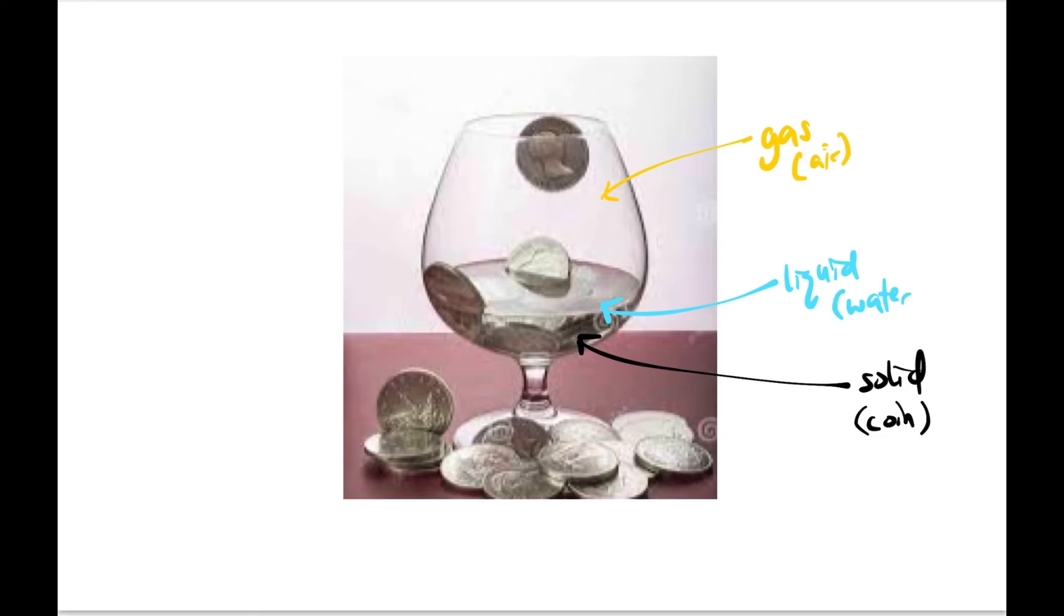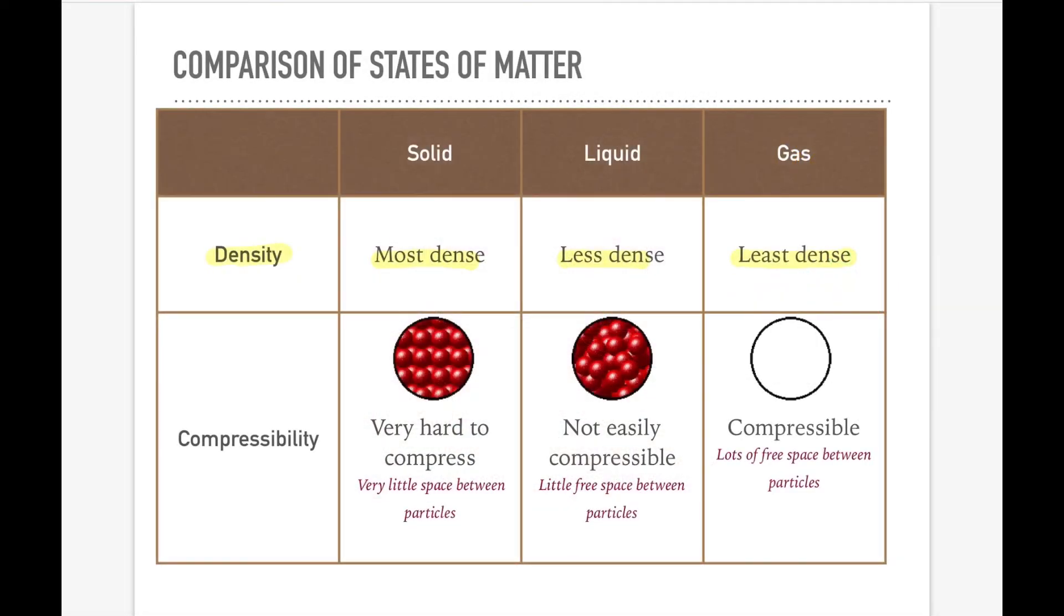Last but not least, compressibility. Basically, solid is very hard to compress because the space between particles is very small. You can't compress it anywhere. But for liquid, it can still be compressed but not easily because there's little free space between the particles. And gas, of course, is very easy to compress because there's lots of free space between particles, so you can fill the spaces between the particles.